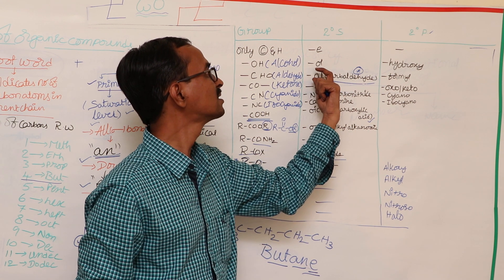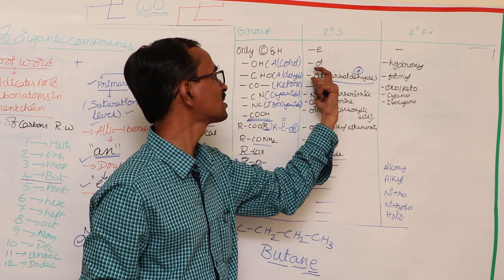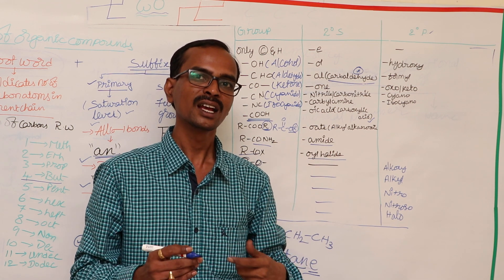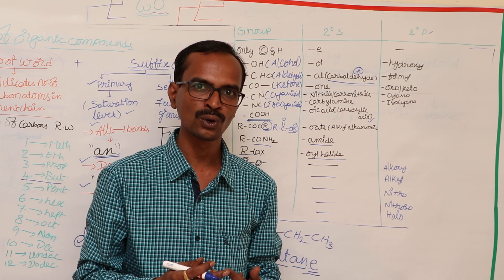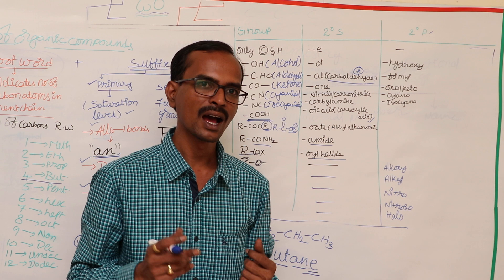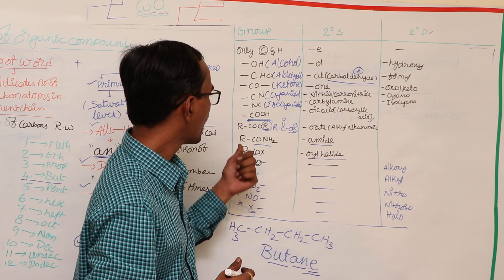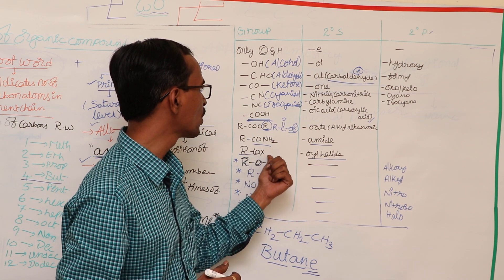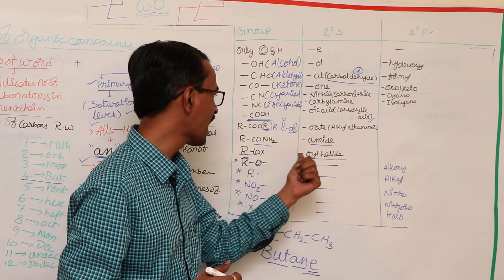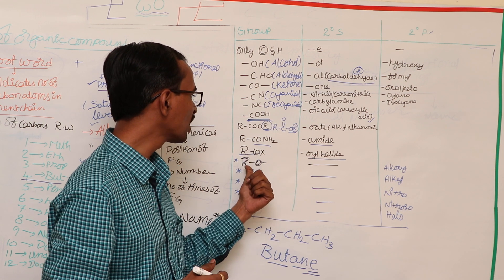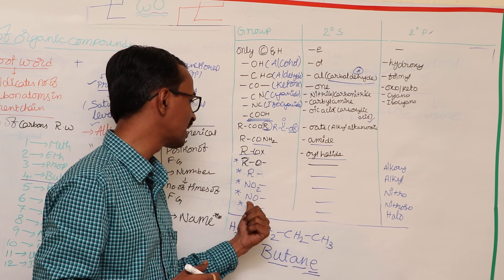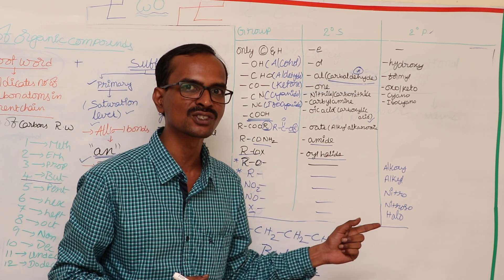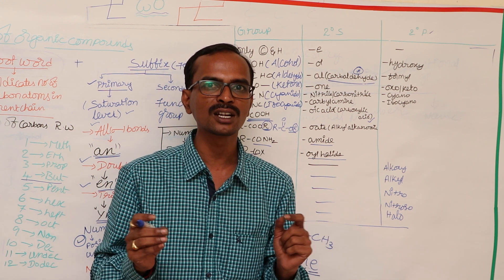Regarding the examples for aldehyde, cyanide, and carboxylic acid, I will explain with examples in the next video. Amide, COX (acid halide), alkoxy, alkyl, nitro, nitroso, and halogroups are always considered as substituents only — they are not considered as functional groups.